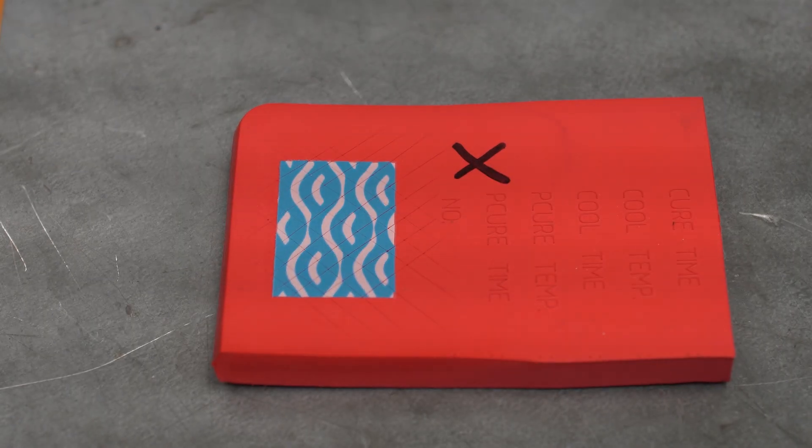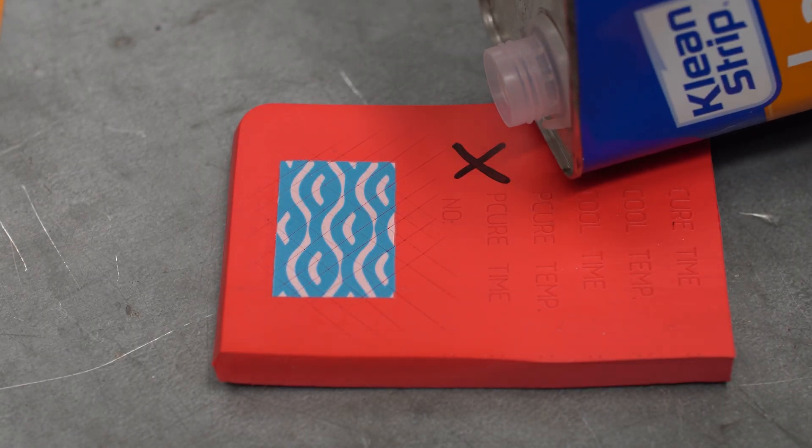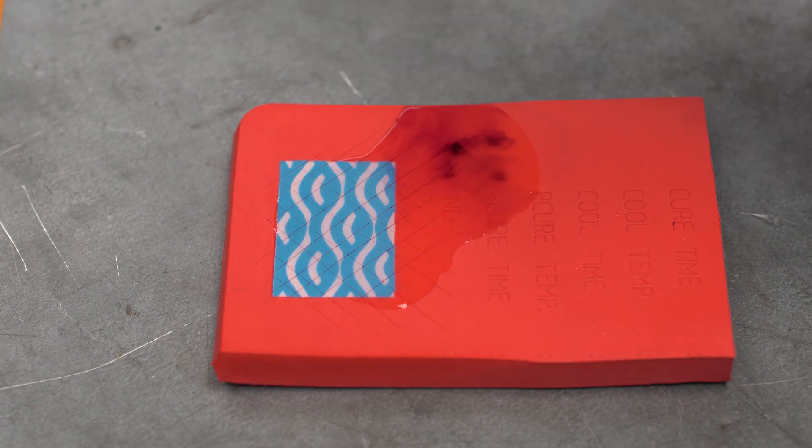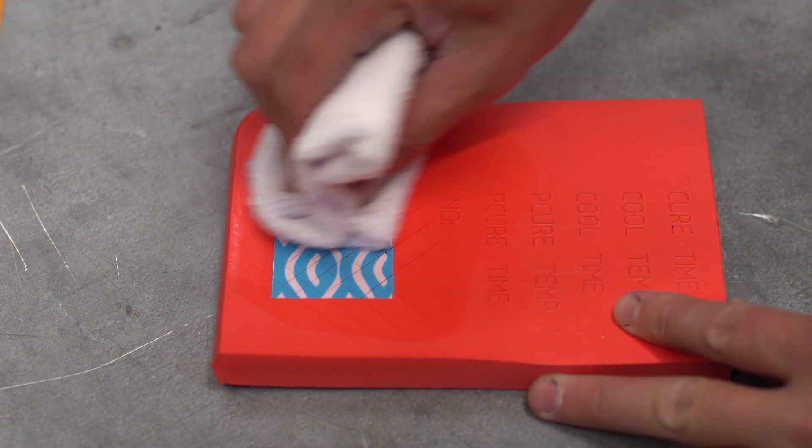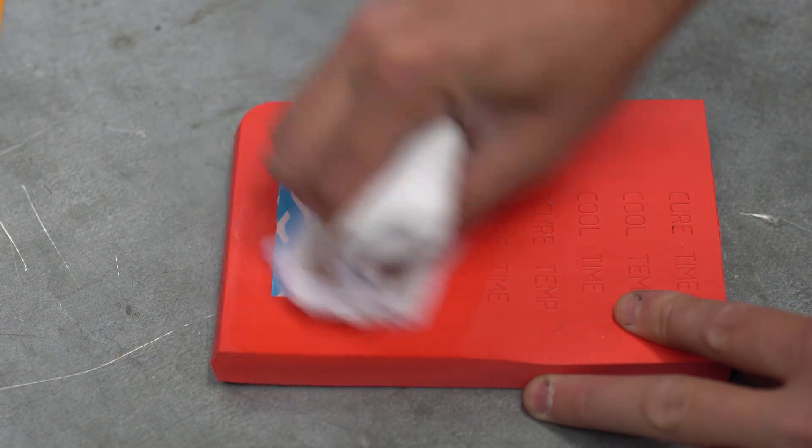Now, let's try something stronger. Lacquer thinner is designed to rip off inks and labels. Without even wiping, the so-called permanent marker has been stripped off. Meanwhile, we can aggressively try to rub in this harsh chemical and it will simply not come off.